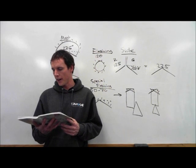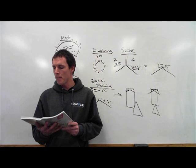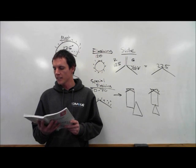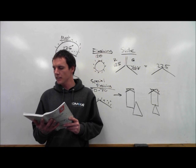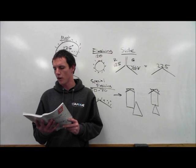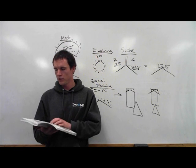Power-driven vessels underway. A power-driven vessel underway shall exhibit a masthead light forward, a second masthead light abaft of and higher than the forward one, except that a vessel less than 50 meters in length shall not be obliged to exhibit such a light but may do so. Side lights and a stern light. Just like the picture.